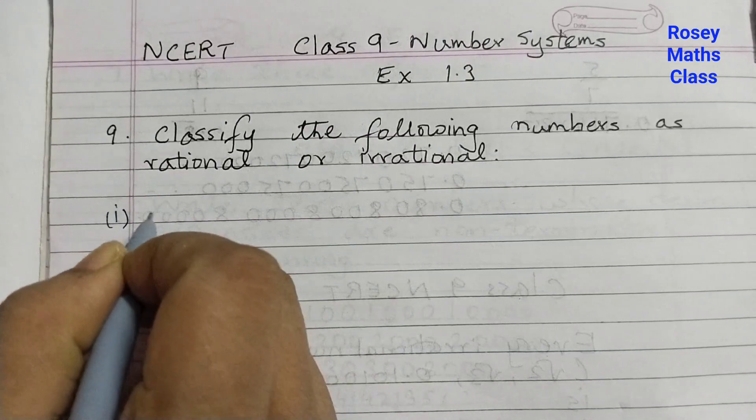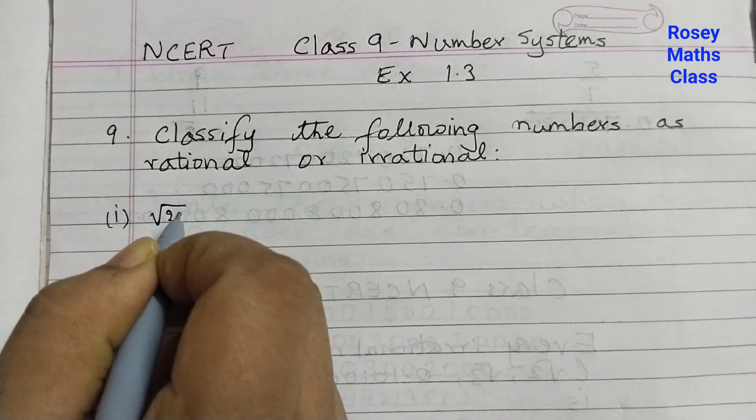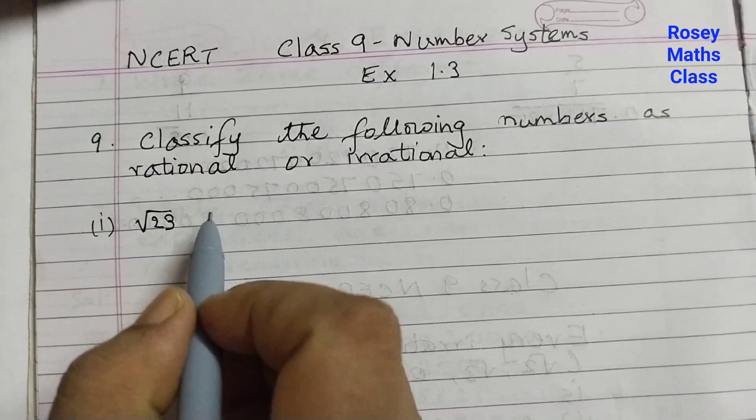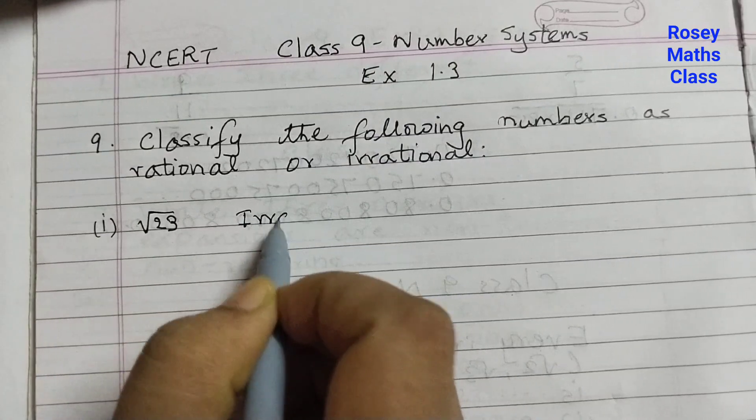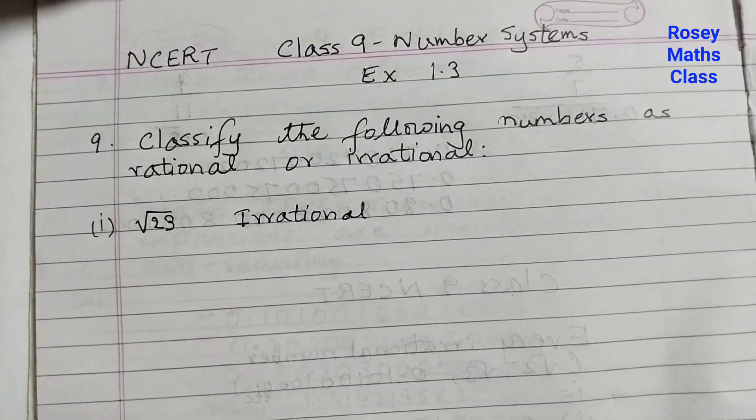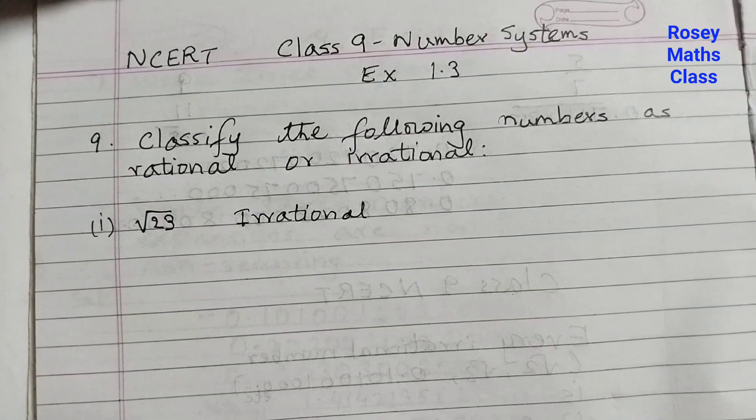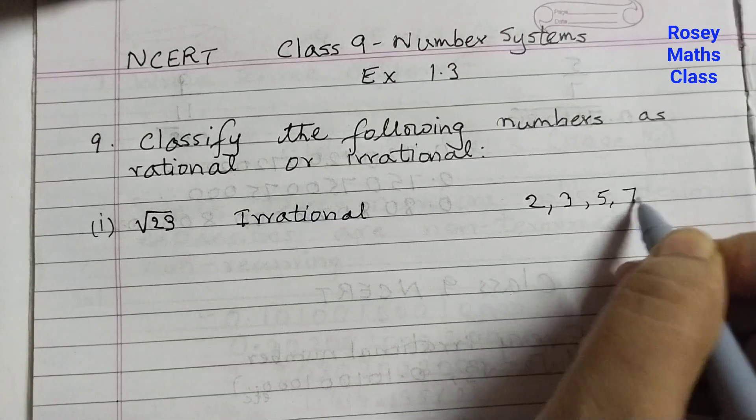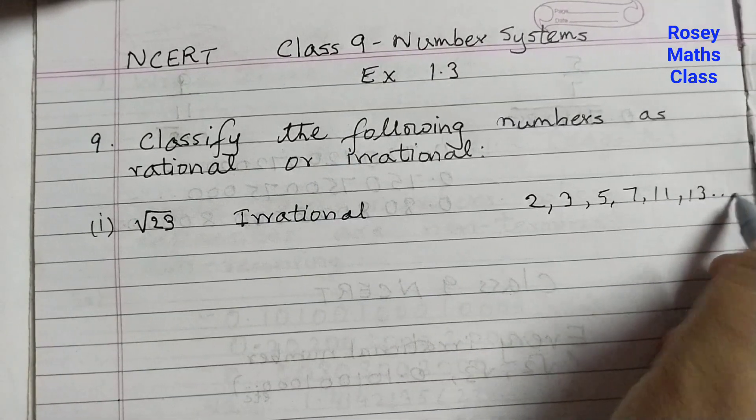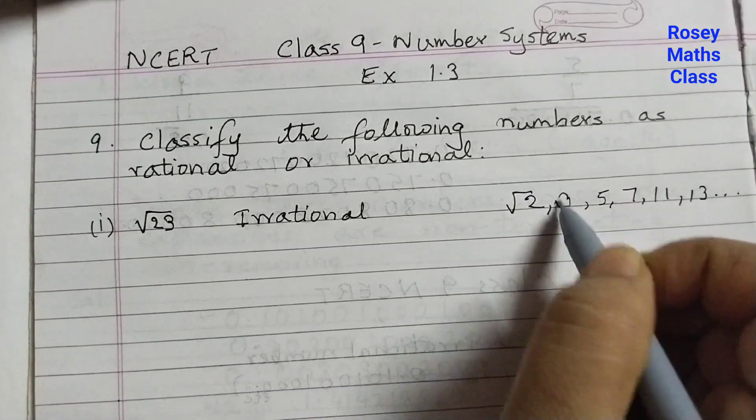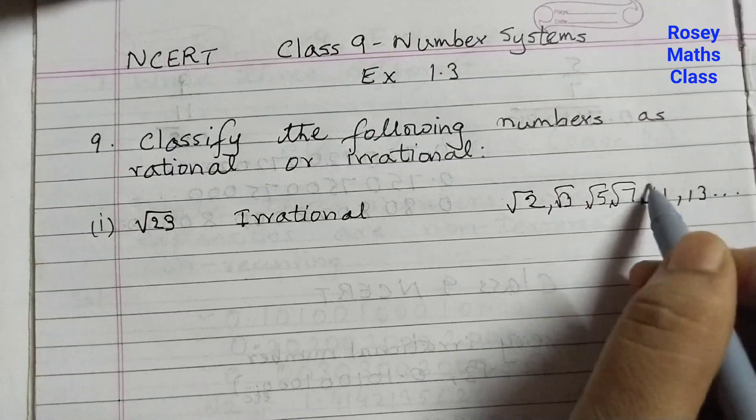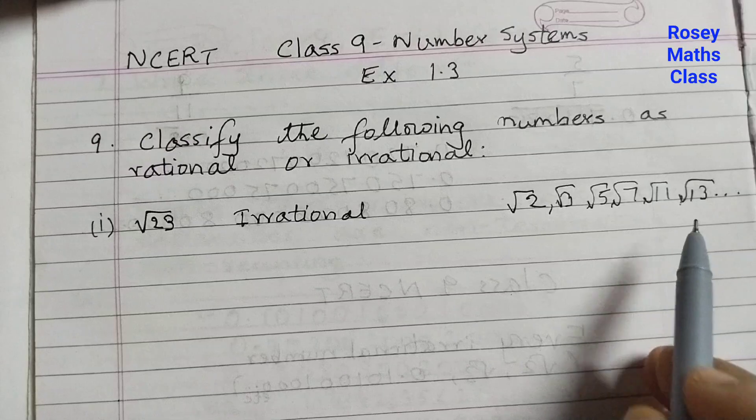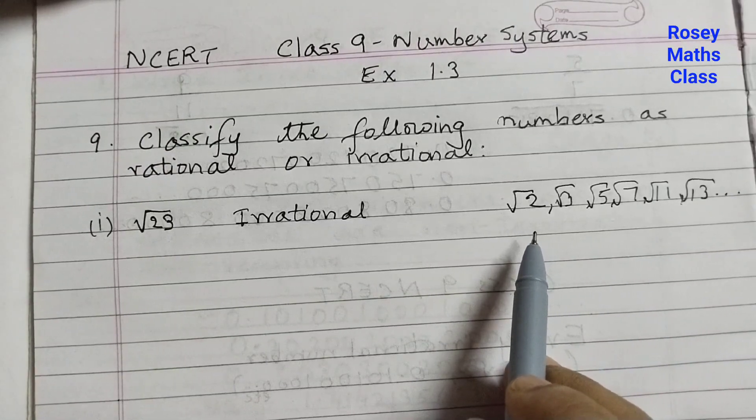The first one is square root of 23. 23 is a prime number, so square root of 23 is an irrational number. Remember that whenever we have a prime number under the root symbol, like prime numbers 2, 3, 5, 7, 11, 13 and so on, the square root of these prime numbers like root 2, root 3, root 5, root 7, root 11, root 13 are all irrational numbers. So square root of a prime number is an irrational number.